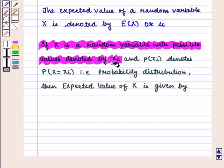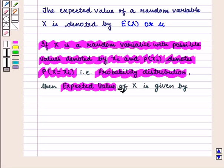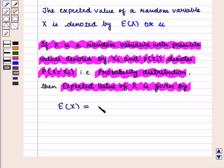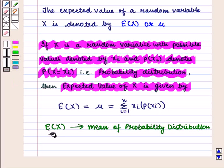If capital X is a random variable with possible values denoted by xi, and P(xi) denotes the probability that capital X equals xi, that is the probability distribution, then the expected value of capital X is given by E(X) = mu = summation of xi times P(xi), where i goes from 1 to n. The expected value of capital X is also called the mean of the probability distribution.